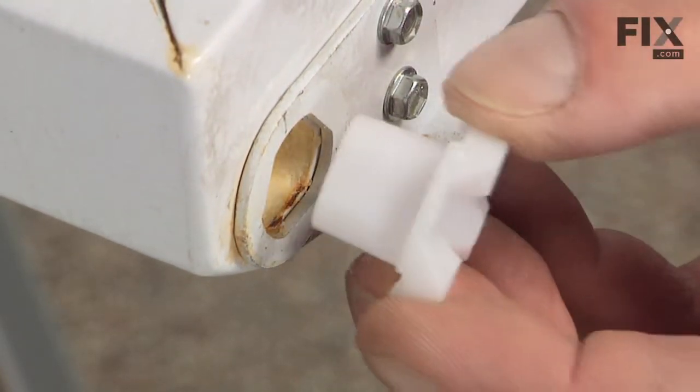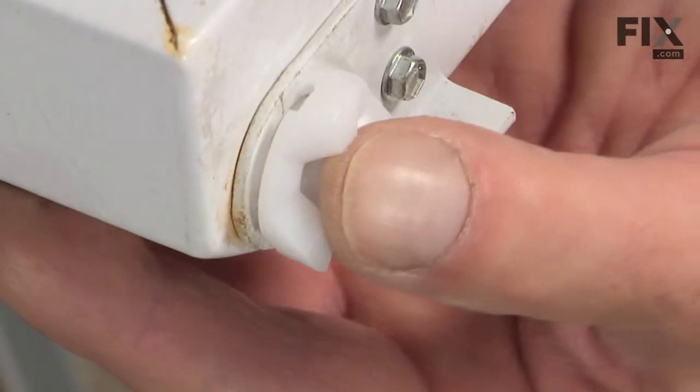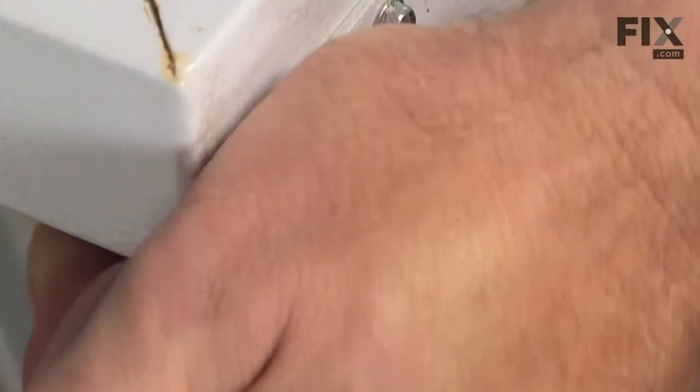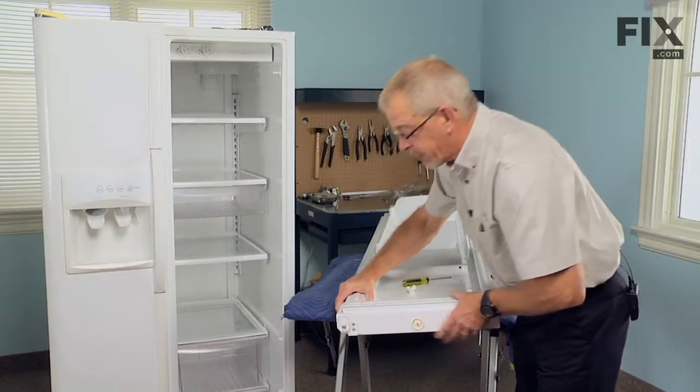Take our new bearing, it's triangular in shape, just line it up, press it into place, and we're ready to reinstall the door.